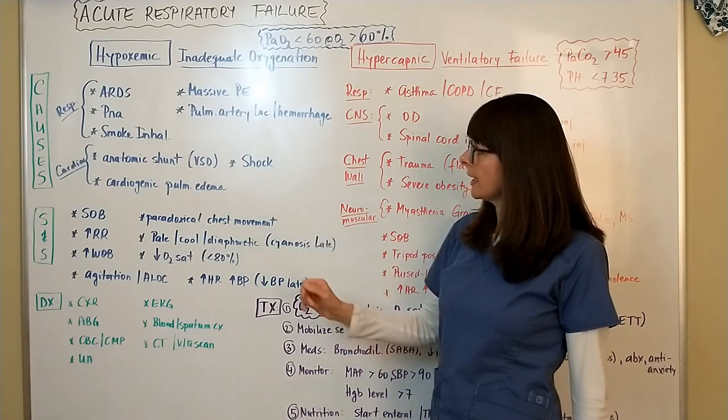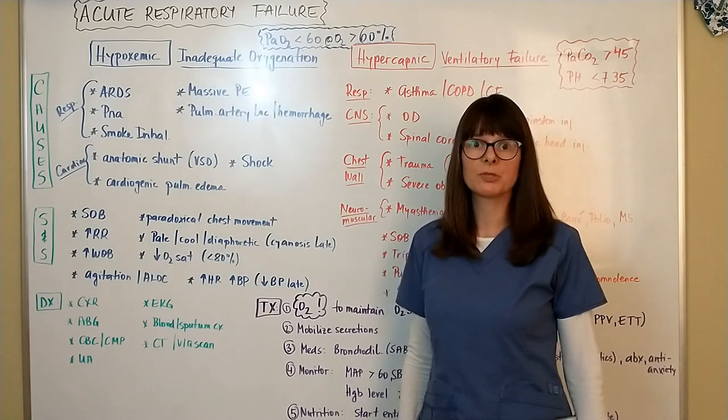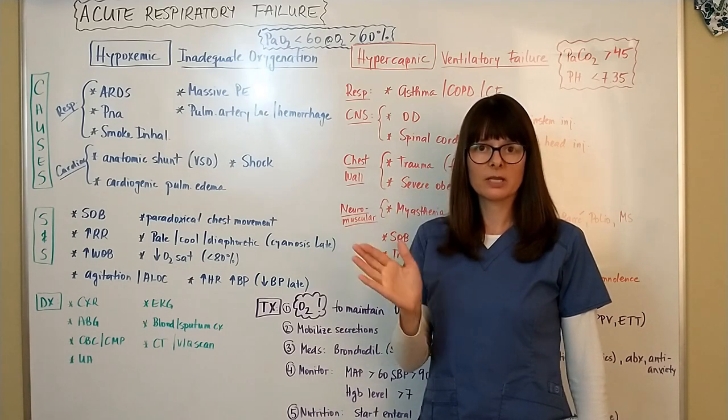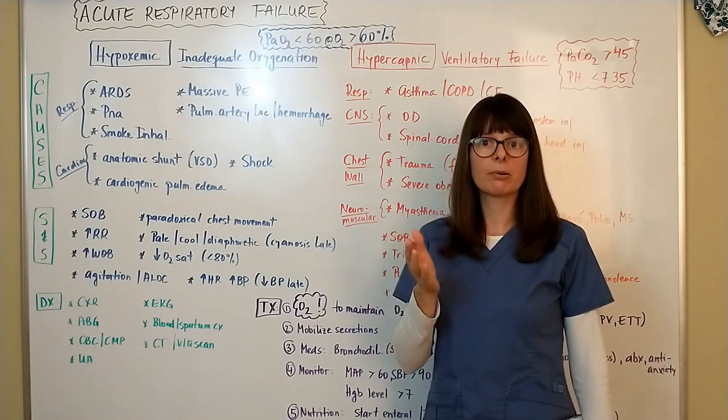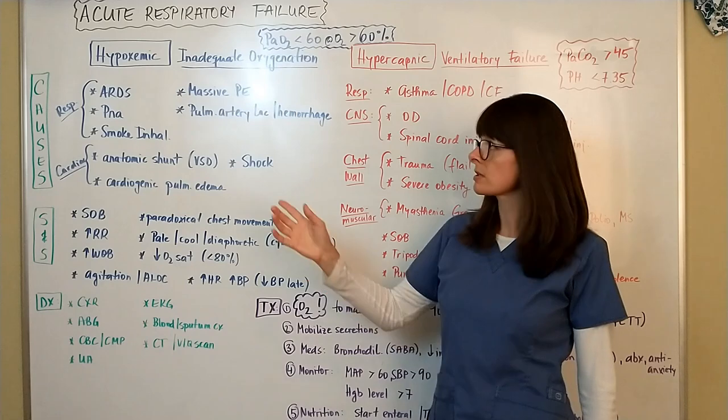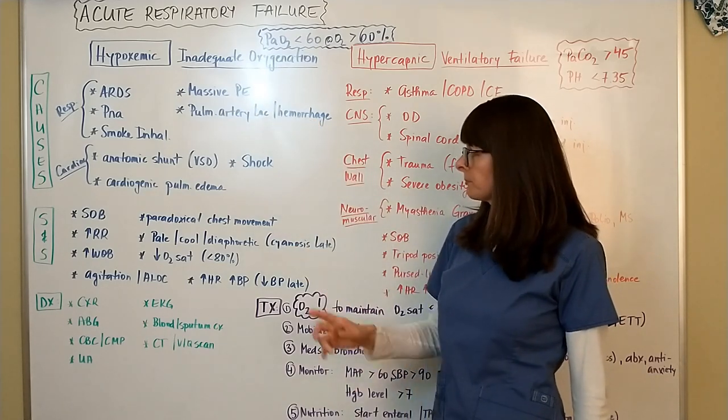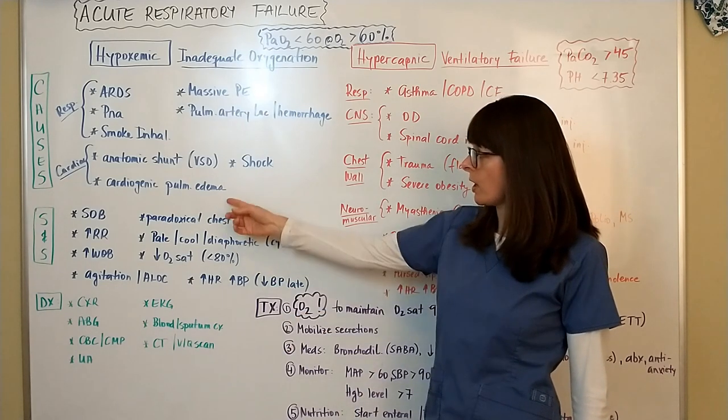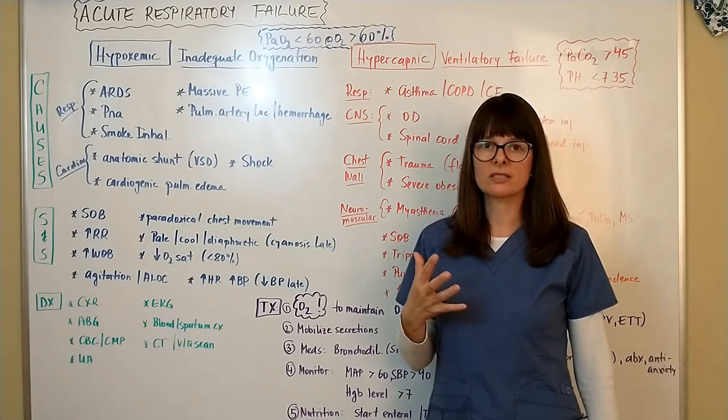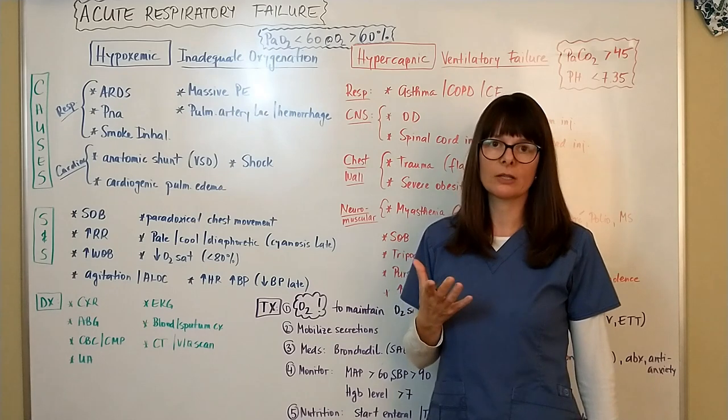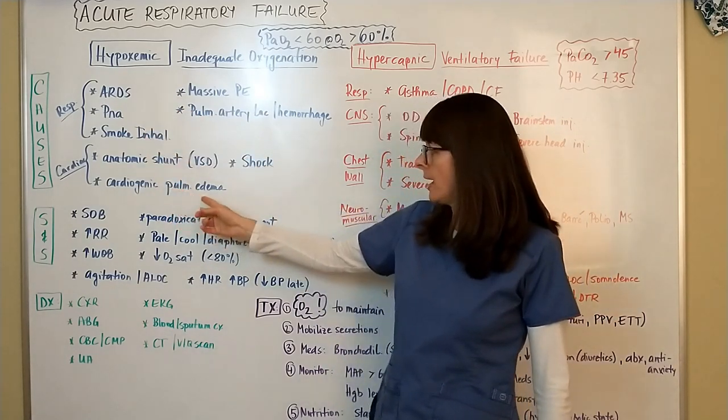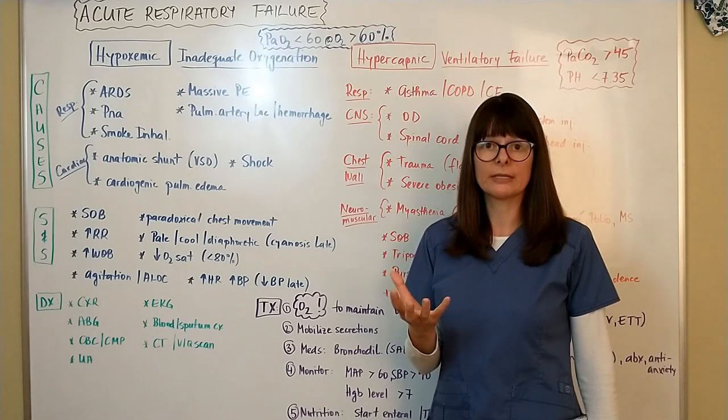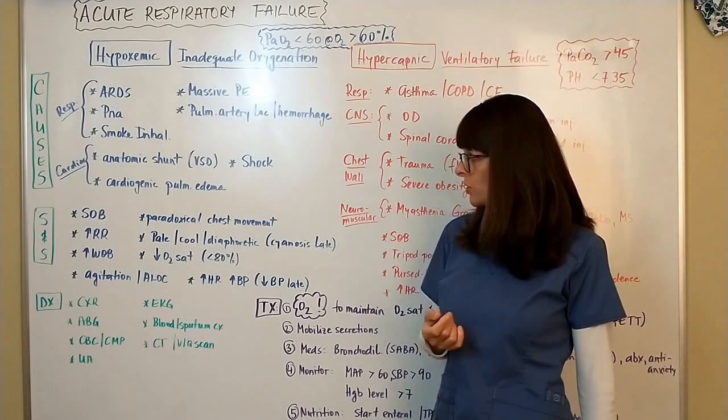Cardiac causes can be an anatomic shunt such as a ventricular septal defect. Remember that is an abnormal opening in the ventricular septum where blood is recirculating and not every drop of blood might make its way to the lungs, therefore we have overall inadequate oxygenation. Shock can also lead to hypoxemic respiratory failure as well as cardiogenic pulmonary edema. Anything that causes congestion of the alveoli—ARDS, pneumonia, and cardiogenic pulmonary edema—where the alveoli are drowning in fluid and not able to perform gas exchange as normal.